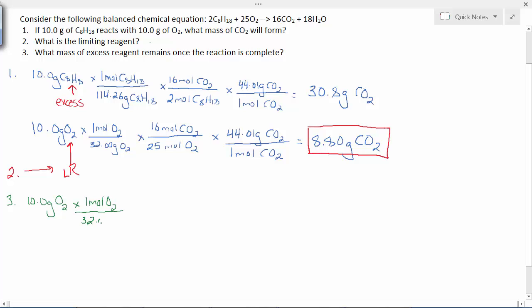You're going to perform a mass-mass calculation from the mass of the limiting reagent that was provided (10 grams of O2) to determine what mass of octane C8H18 we needed to completely react with those 10 grams of O2. This is a mass-mass problem from O2 to C8H18.